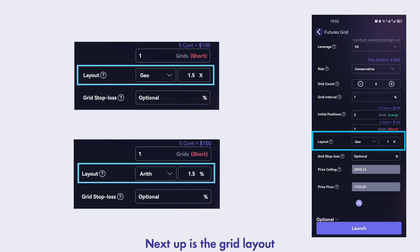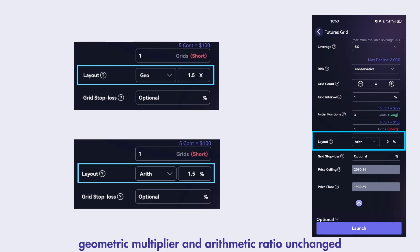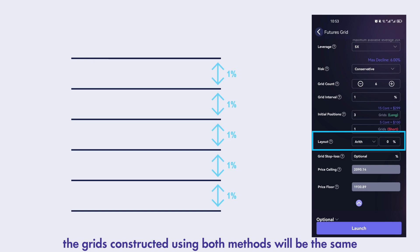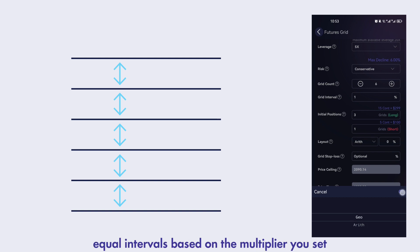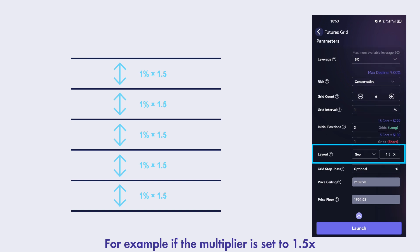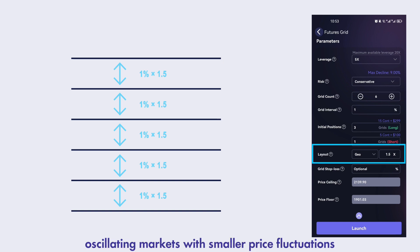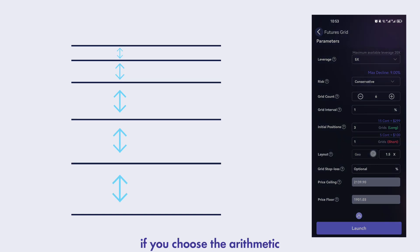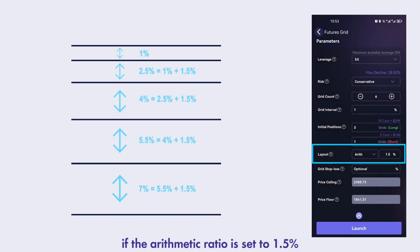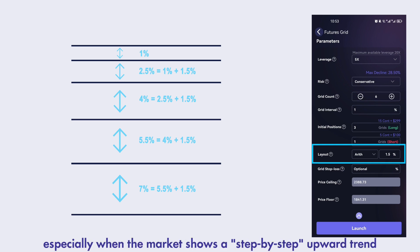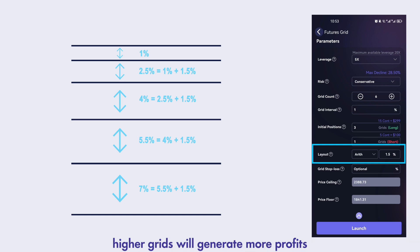Next up is the grid layout. If you keep the default geometric multiplier and arithmetic ratio unchanged, the grids constructed using both methods will be the same. If you choose geometric, the robot will lay out the grids with equal intervals based on the multiplier you set — for example, if the multiplier is set to 1.5x, you will get a grid layout like this. In narrow-range oscillating markets with smaller price fluctuations, each grid will yield higher profits. On the other hand, if you choose arithmetic, the grids will be added with the arithmetic ratio incrementally for each grid — for example, if the arithmetic ratio is set to 1.5%, your grid layout will look like this. In rising markets, especially when the market shows a step-by-step upward trend, higher grids will generate more profits.